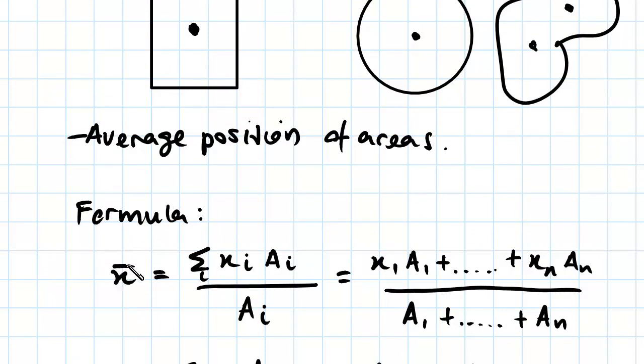So x bar is denoted as the distance from the x-axis. So this is our centroid distance from the x-axis. Sorry, that should be the distance, the horizontal distance.